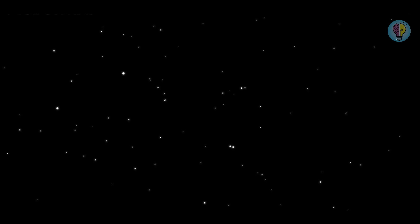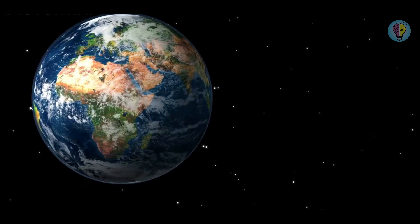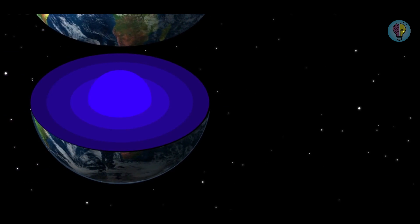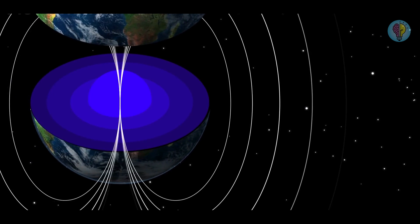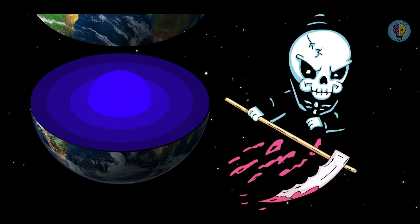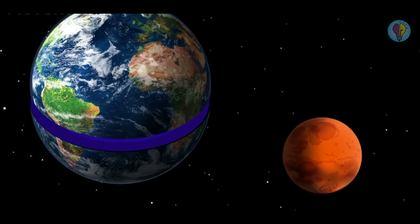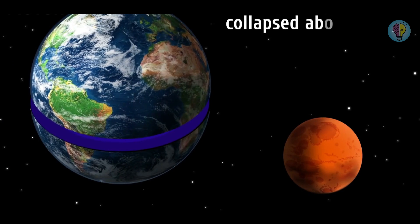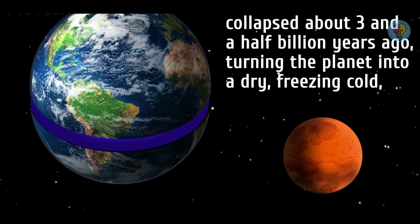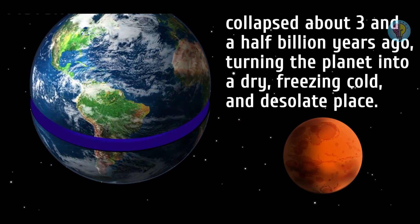Freezing of the earth's core. In 3 or 4 billion years, the earth's molten liquid core may solidify. In this case, the planet will lose its magnetic field and consequently its atmosphere. This will certainly lead to the demise of all forms of life on the planet. Scientists believe this is probably what happened to Mars. Its magnetosphere collapsed about 3 and a half billion years ago, turning the planet into a dry, freezing cold, and desolate place with no Airbnbs.